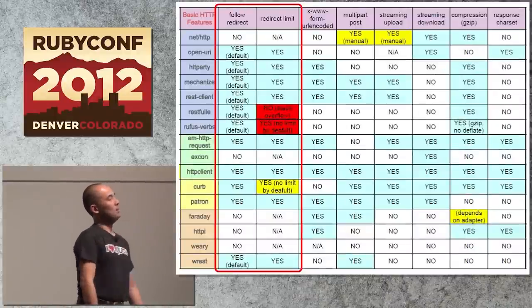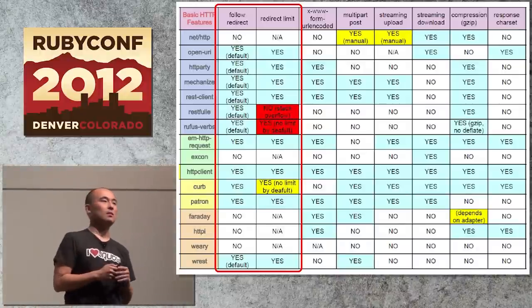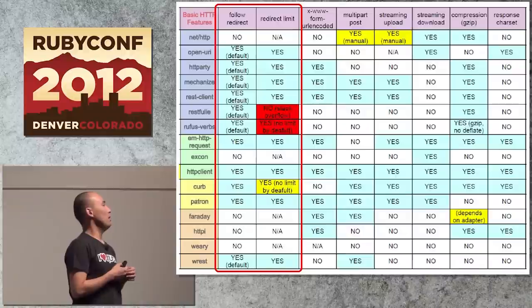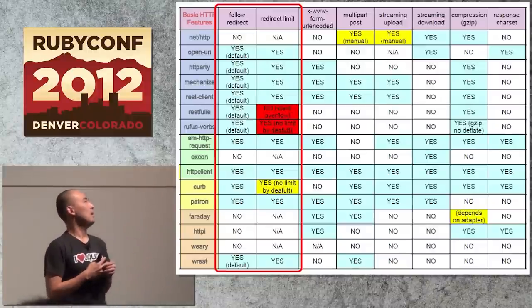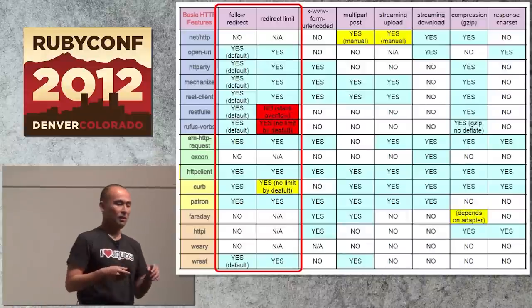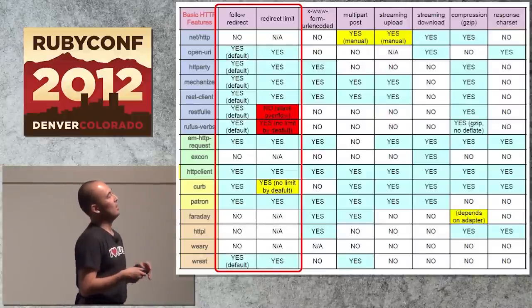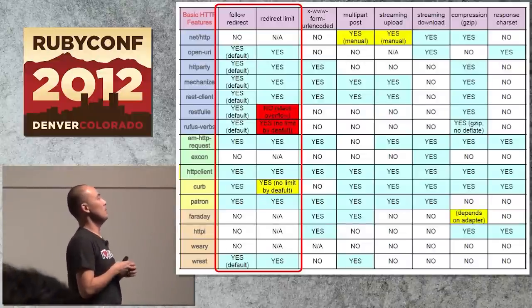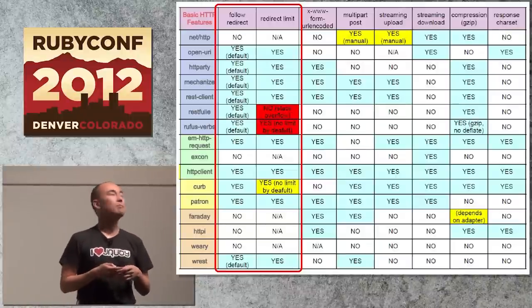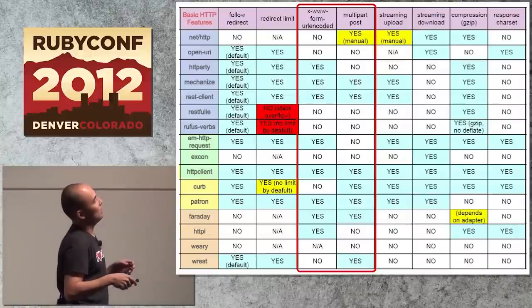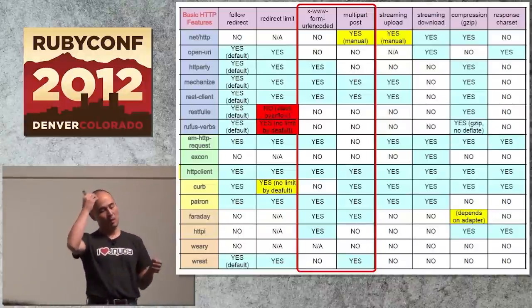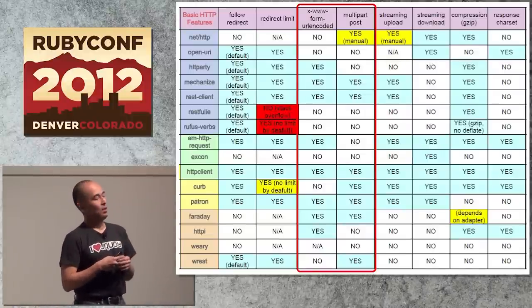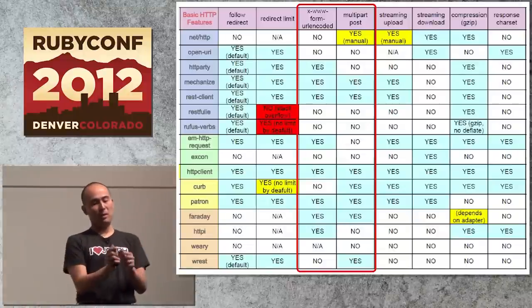Redirect: HTTP servers can return redirect responses for clients to follow. Many client libraries support redirect following, but some don't have a redirect limit. If the server returns the same redirection repeatedly, it causes an infinite loop and crashes your Ruby interpreter. Take care about the redirect limit if using such libraries. For form URL encoding, supported libraries let you pass query parameters and POST form data as a hash or array. Without this feature, you'd need to manually concatenate parameters with ampersands and equals signs.